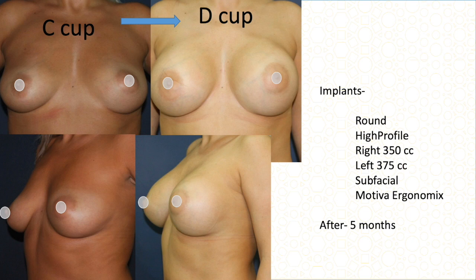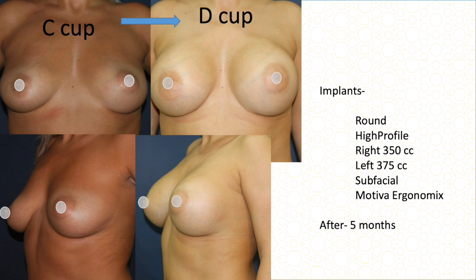This C cup patient has more sagging — grade one sagging. Instead of a lift and more scarring, we decided to correct it with the implant only. Because this is a smaller breast I used two different-size implants: 375 cc and 350 cc placed sub-fascially — above the muscle — to give more lift. This is five months after surgery.